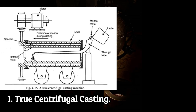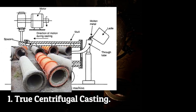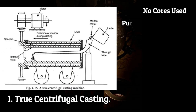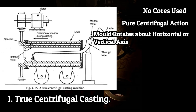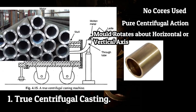True centrifugal casting is sometimes known simply as centrifugal casting. It is a process of making symmetrical round hollow sections. This process uses no cores and the symmetrical hollow section is created by pure centrifugal action. The mold rotates about a horizontal or vertical axis, mostly horizontal, and molten metal is introduced from an external source. The centrifugal force forces the metal to the outer wall of the mold and the mold rotates until the casting solidifies. Slag particles, being lighter, separate at the central part and are removed by machining. This process is used to make hollow pipes, tubes, and hollow bushes which are axisymmetrical with a concentric hole.